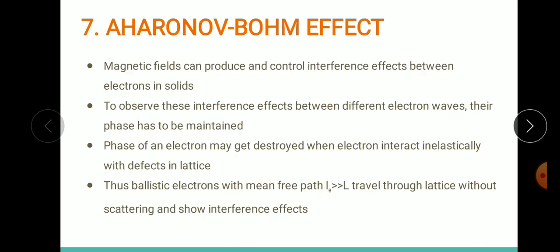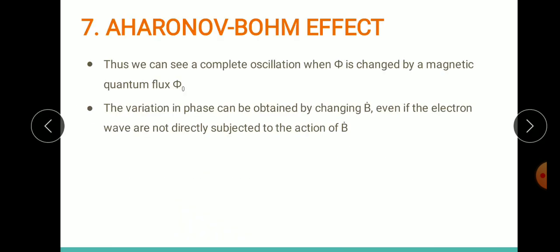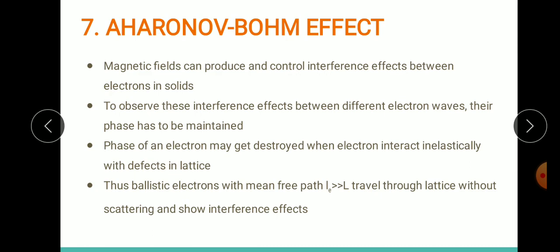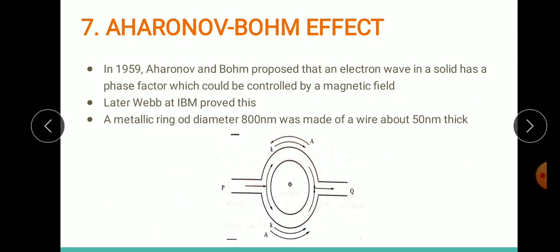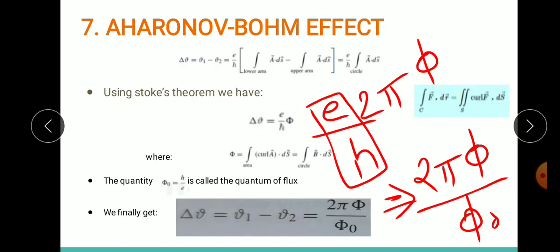So what has the Aharonov-Bohm effect generated? Oscillations in a closed ring. We took a metallic ring and introduced a magnetic field using a solenoid. As the electron entered there was a splitting of amplitude, and at the end point there was interference.